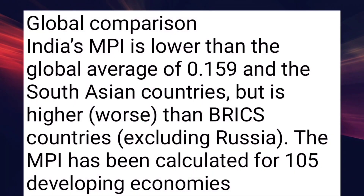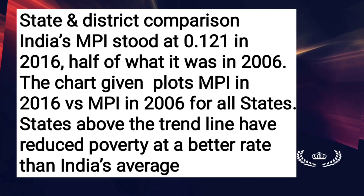India's MPI is lower than the global average of 0.159 and that of South Asian countries, but is higher than BRICS countries excluding Russia. The MPI has been calculated for 105 developing economies. India's MPI stood at 0.121 in 2016, half of what it was in 2006. The chart plots MPI in 2016 vs. MPI in 2006 for all states.